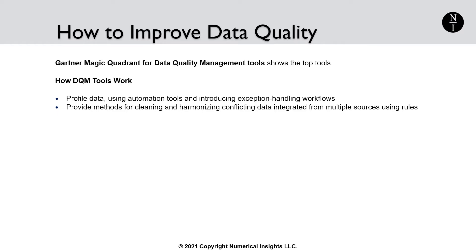So how can we improve data quality? Given the various ways in which data can be used by businesses for making critical decisions and the ways in which poor quality data can creep in, data quality management is no trivial task. There is a plethora of tools available in the market for data quality management, and the Gartner Magic Quadrant for data quality management tools shows the top tools. Data quality management tools work by profiling data using automation tools and introducing exception handling workflows for poor quality data. Tools also provide methods for cleaning and harmonizing conflicting data integrated from multiple sources using data quality rules, so that cleansed records exist in a master data list.